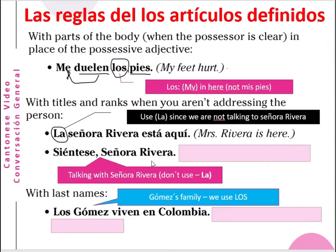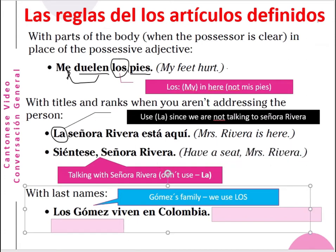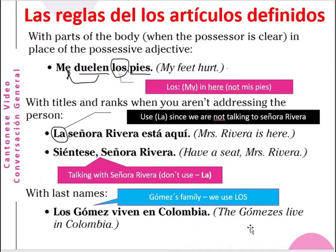However, if you are talking directly to her: 'Siéntese, señora Rivera' — please sit down, Mrs. Rivera — you don't need 'la' in front of 'señora Rivera'. With family names, for example the Gomez family, we use 'los': Los Gómez viven en Colombia — the Gomez family lives in Colombia. So you use 'los' in front of the family name.